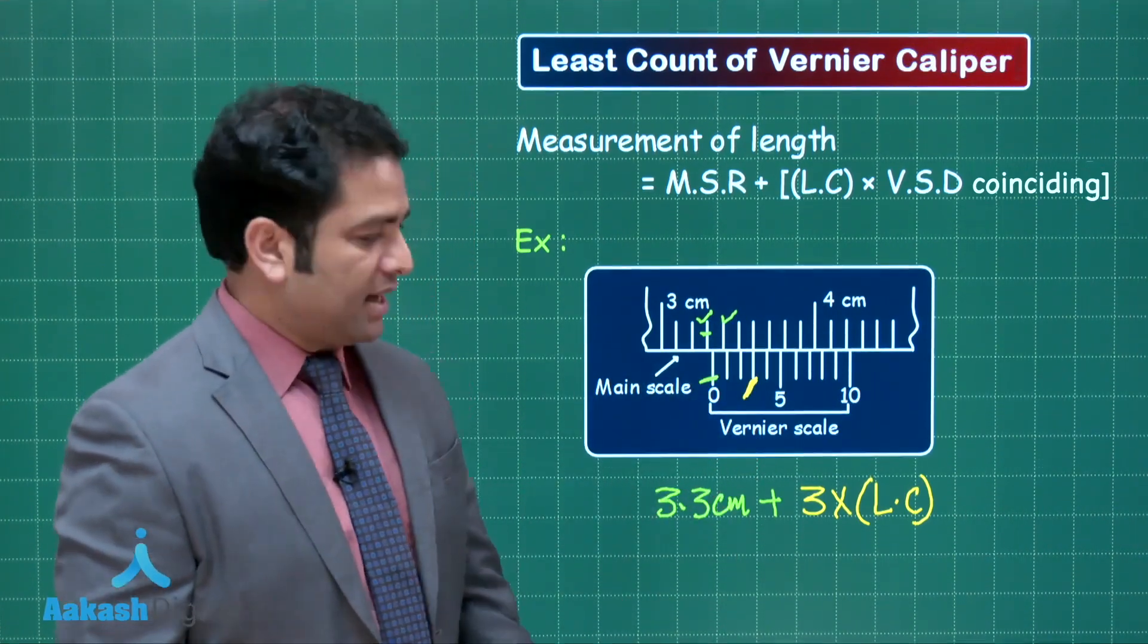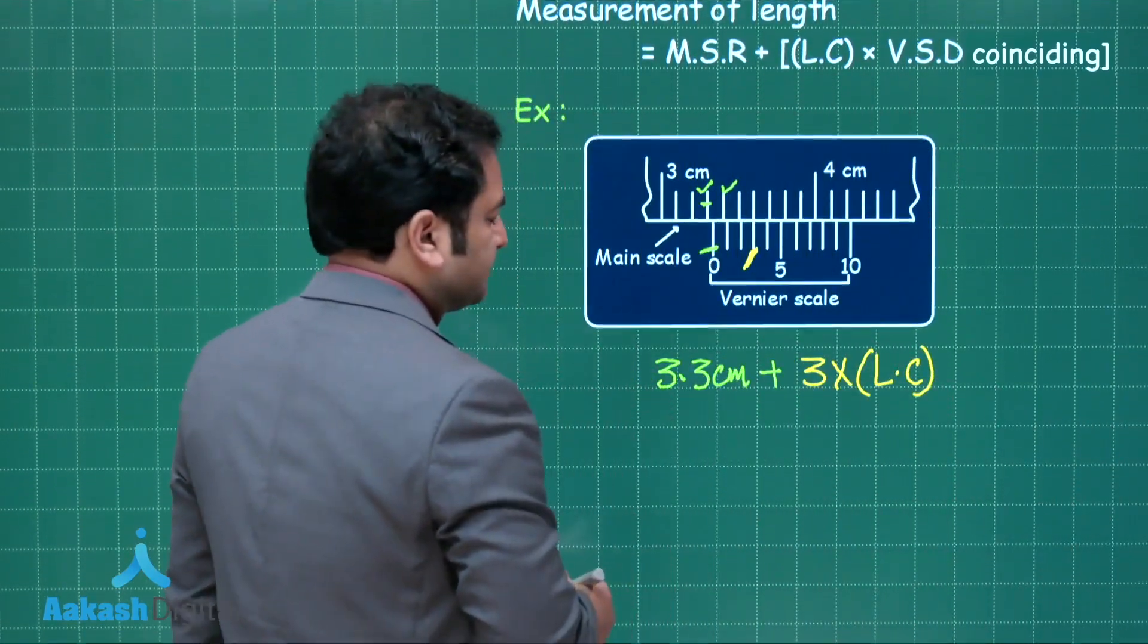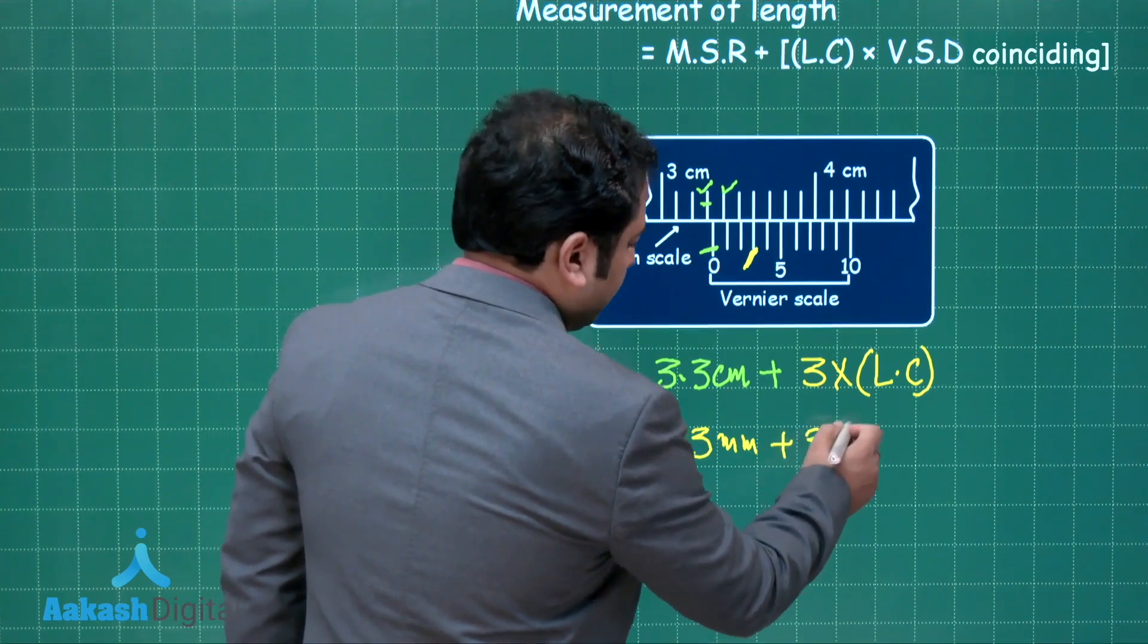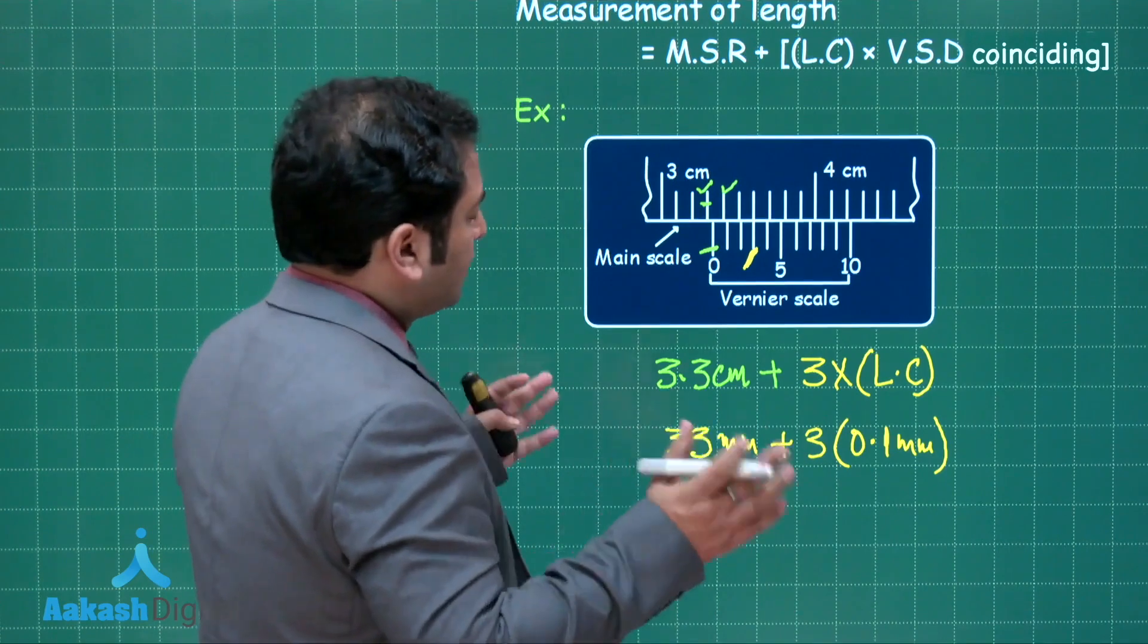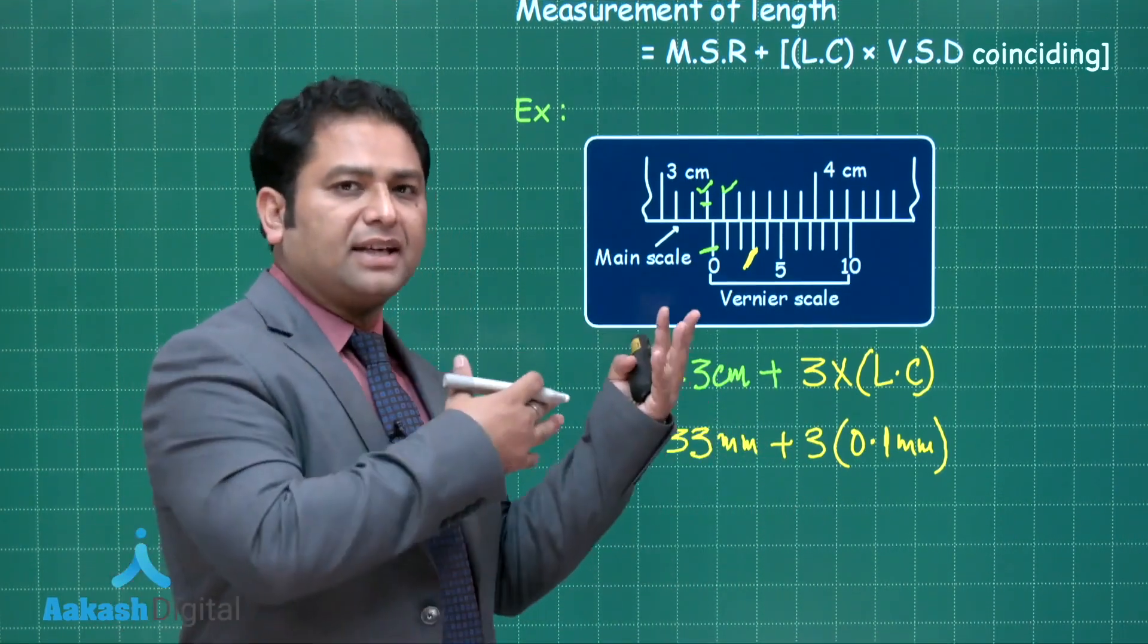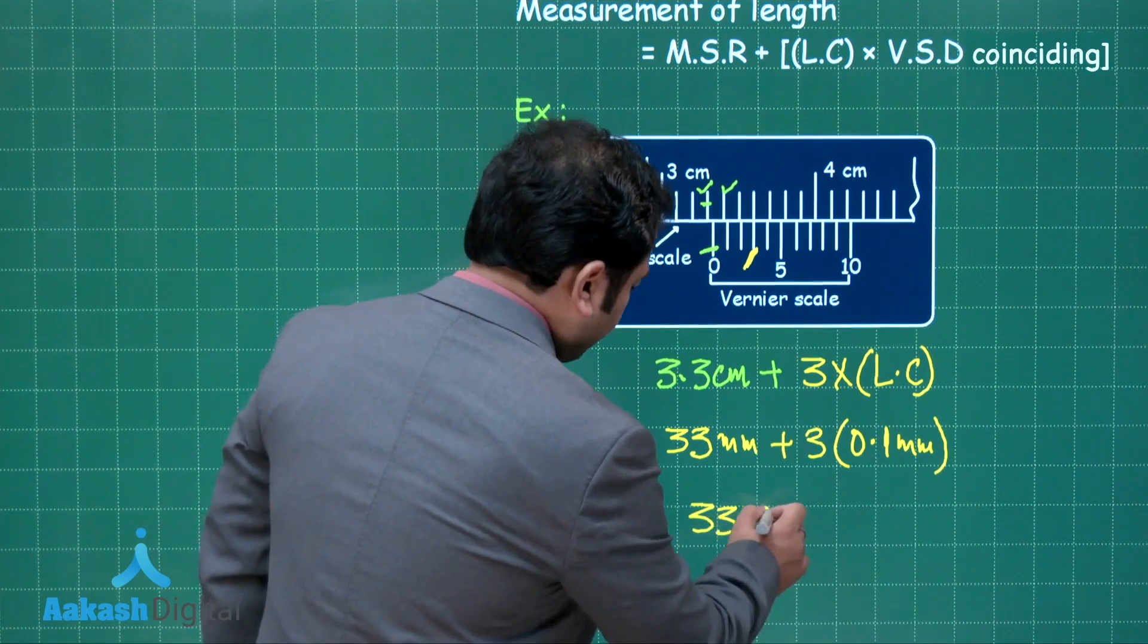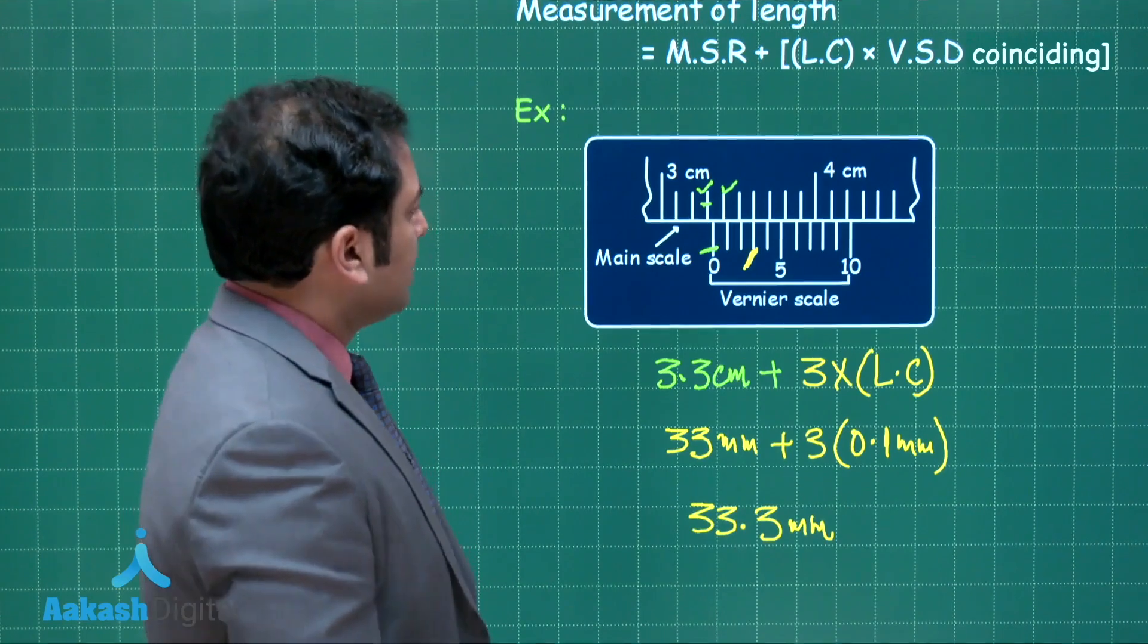For a typical value, this can be written as 33 millimeter, and 3 into 0.1 millimeter. We have already said the least count of the Vernier caliper with 10 divisions, the standard fact—whatever data has been used here. So this is 0.3 plus 33, which is 33.3 millimeter.